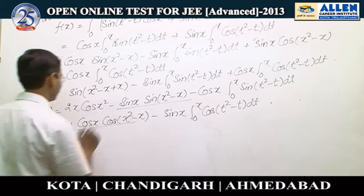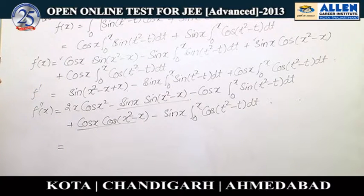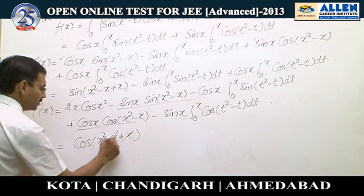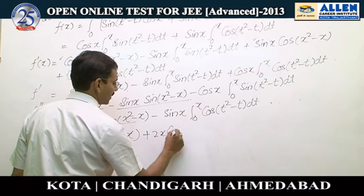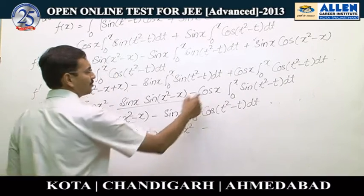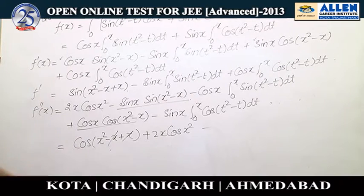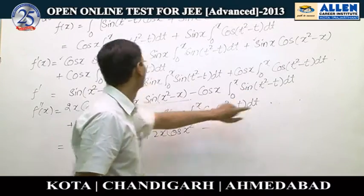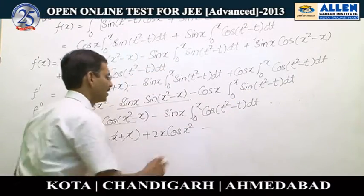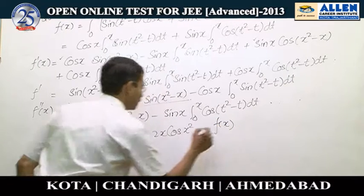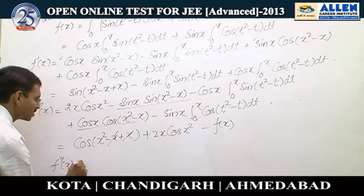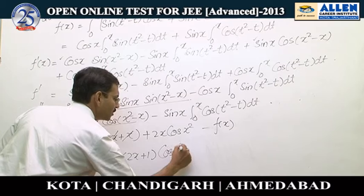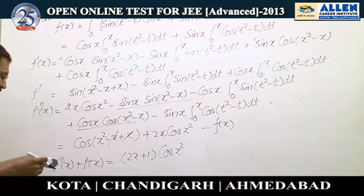We compile these two terms using cos(a)cos(b) - sin(a)sin(b) = cos(a + b), giving cos(x² - x + x) = cos(x²). These cancel, leaving 2x·cos(x²). Taking minus as common, we find it is the same expression as f(x), so we can write it as -f(x). Therefore f''(x) + f(x) = 2x + 1·cos(x²), and the right option is B.